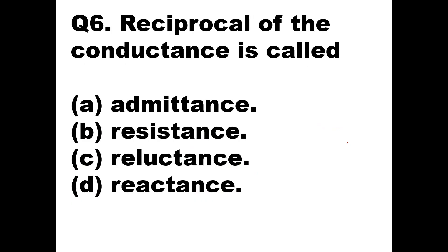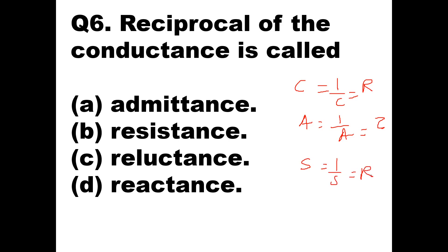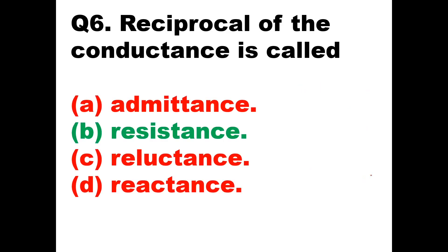Question 6: Reciprocal of conductance is called — ? Conductance means passing of current. The reciprocal of conductance, 1/C, will be resistance. Similarly, reciprocal of admittance, 1/A, is impedance. Reciprocal of susceptance, 1/S, is reactance. So if the question asks for the reciprocal of conductance, the answer is resistance — Option B.